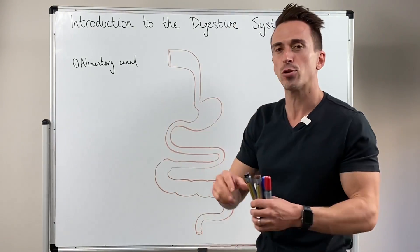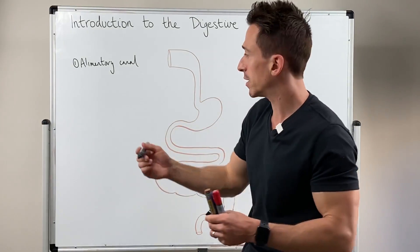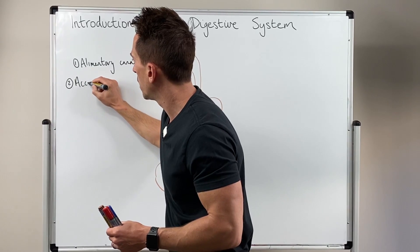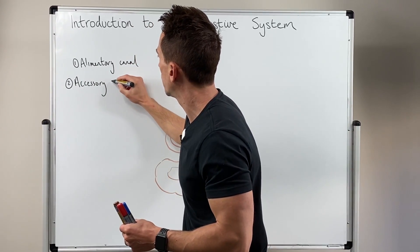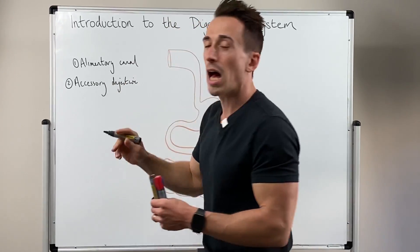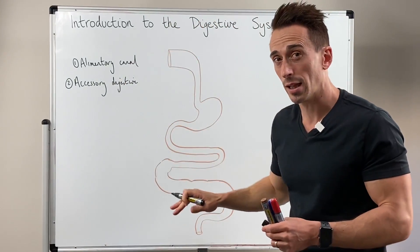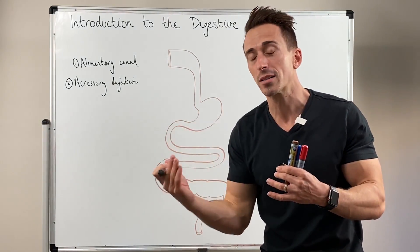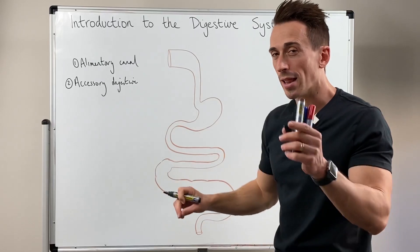Now in addition to the alimentary canal, another primary component of the digestive system are the accessory digestive structures. Accessory digestive structures are not components of the alimentary canal but they are accessory components, and they often have ducts or tubes that lead into the alimentary canal.